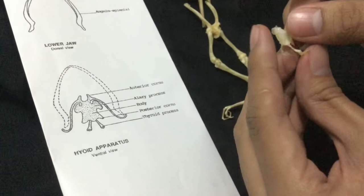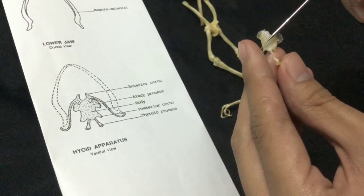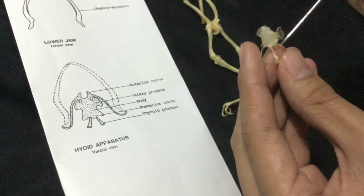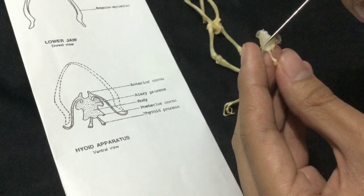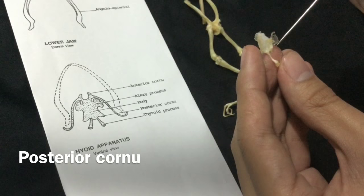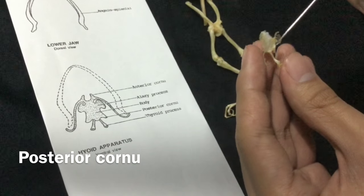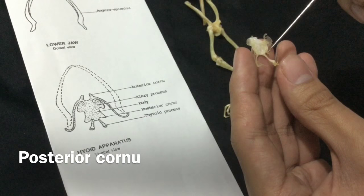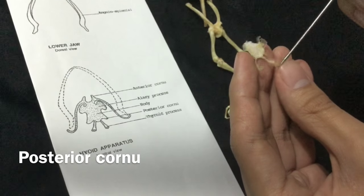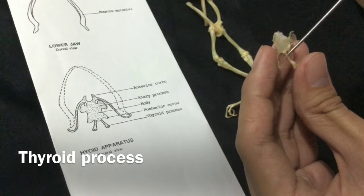And then, if you will see, they are very small. These are what you call the posterior cornu. And then these extensions at the bottom, these are the thyroid process. That's it for the hyoid bone of the frog.